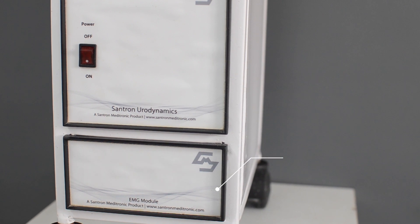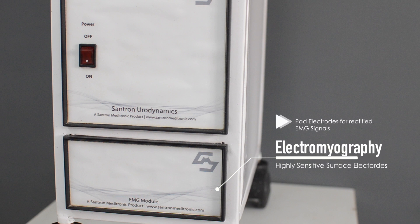The electromyography unit offers electrical isolation from the machine supply and the patient for rectified EMG signals.